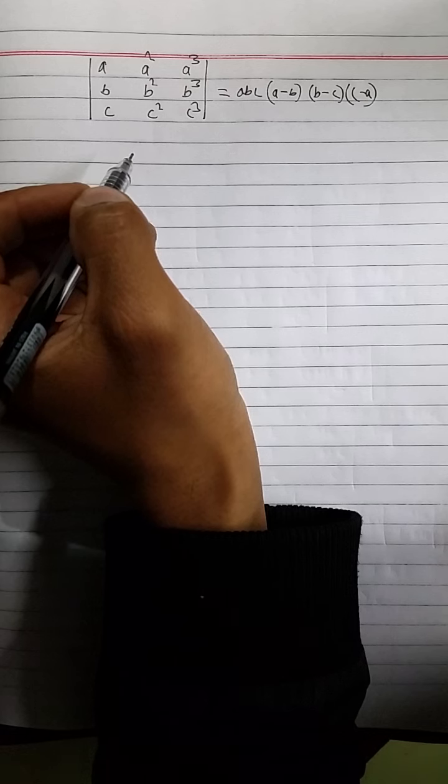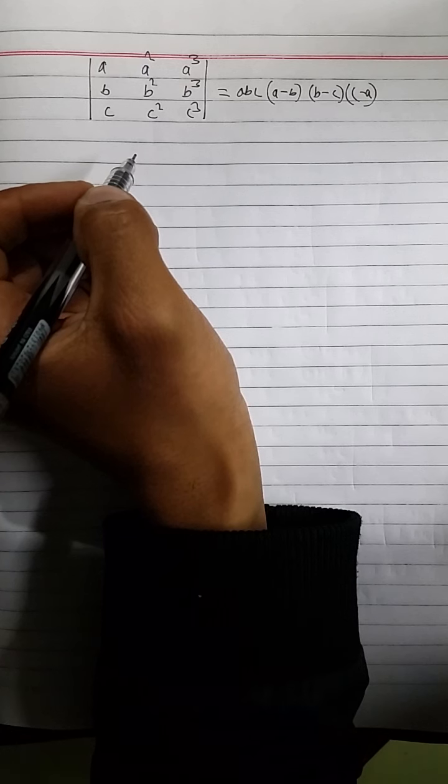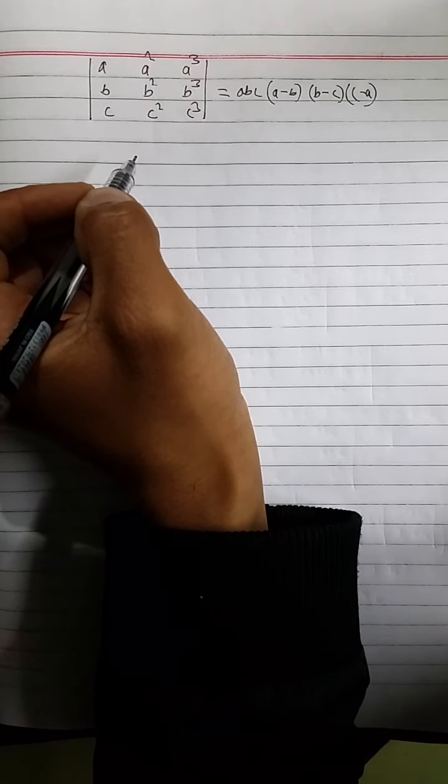Before we start this problem, you have to understand first that for the determinant, if any particular row or column has existing element common, then it can be taken common out.